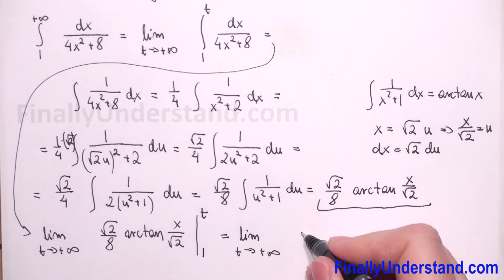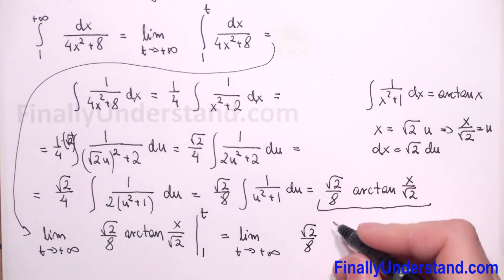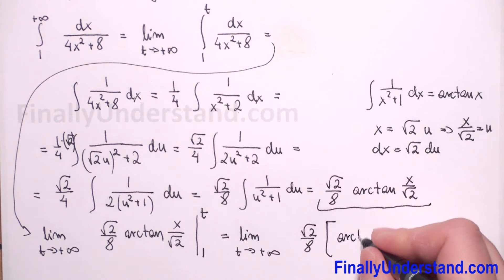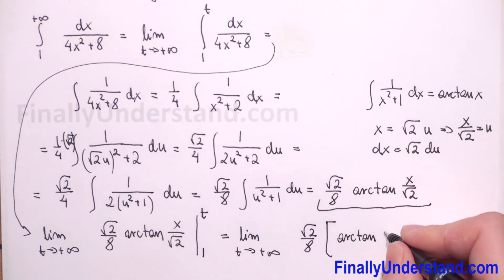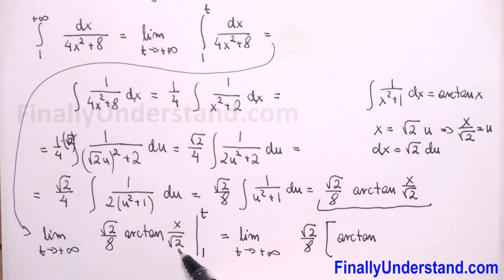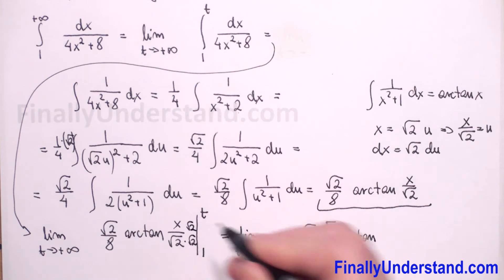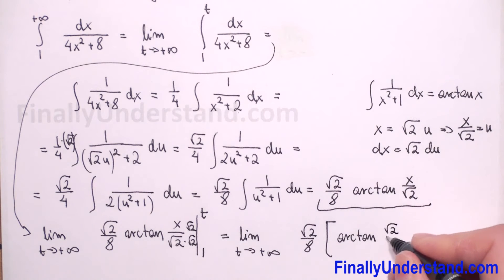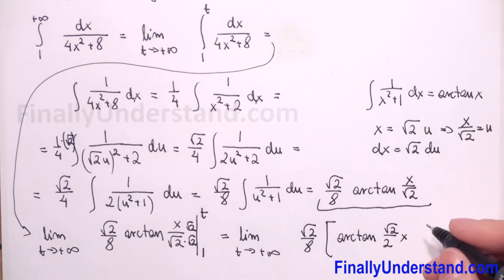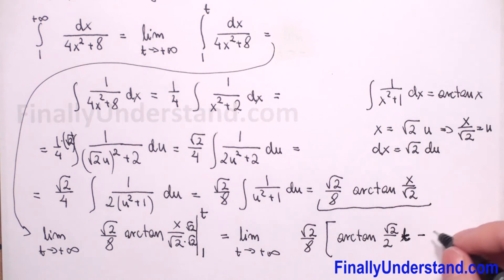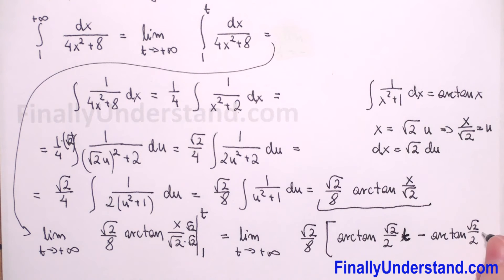We plug in the upper limit t first: we have square root of 2 over 8 times arctangent. Because we don't like a square root in the denominator, we multiply by square root of 2 over 2, giving arctangent of square root of 2 over 2 times t. Then we subtract the lower limit: minus arctangent of square root of 2 over 2 times 1.